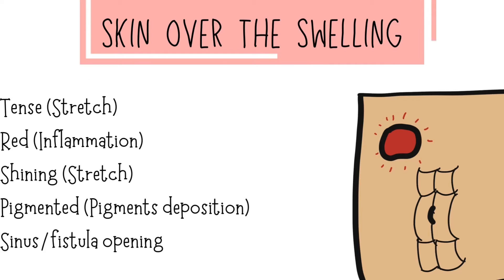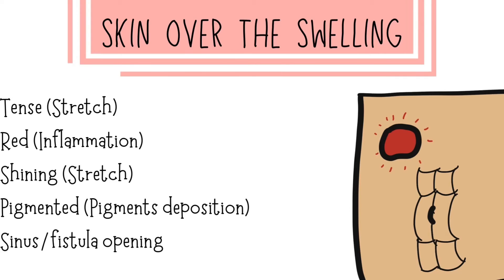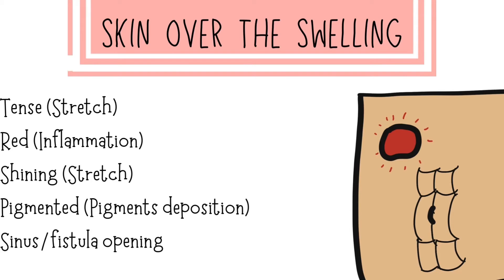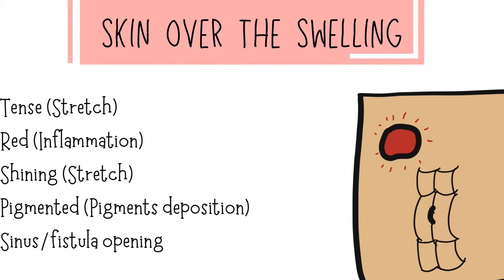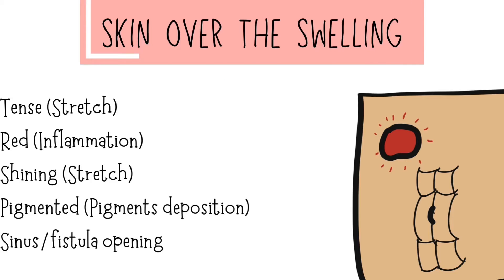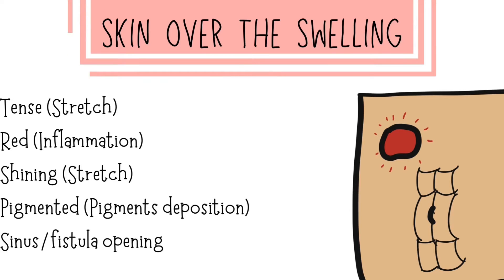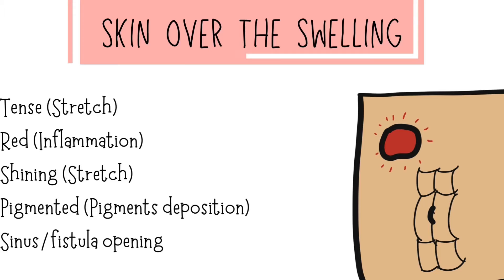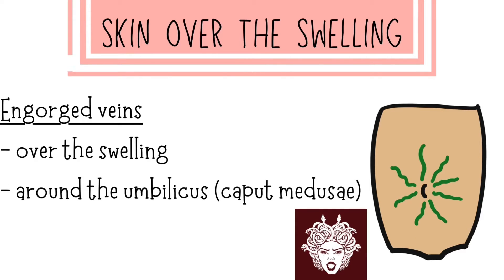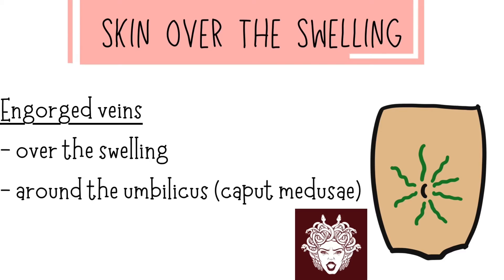We also have to comment about the condition of the skin over the swelling. The skin may be tense because it is stretched by an underlying lump. If the skin is red, that is because of inflammation like an abscess or underlying acute appendicitis. If the skin is shining, it is also because of stretching. The skin can be pigmented due to deposition of pigments, and there can be a sinus or fistula opening on the swelling.